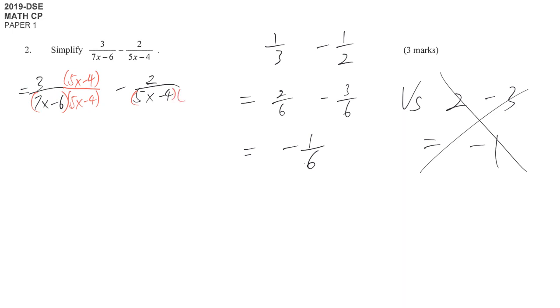The other term is the same. What is missing is 7x minus 6. So we both sides times 7x minus 6. Then we just follow our decision. Now it becomes the same denominator. That's why we can combine them.